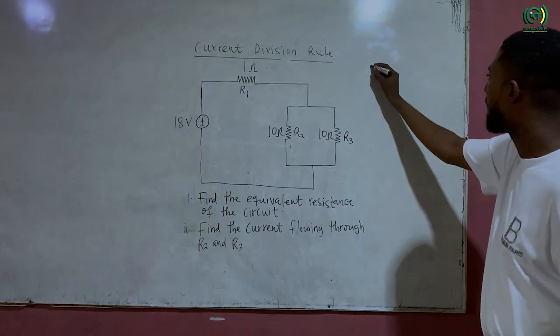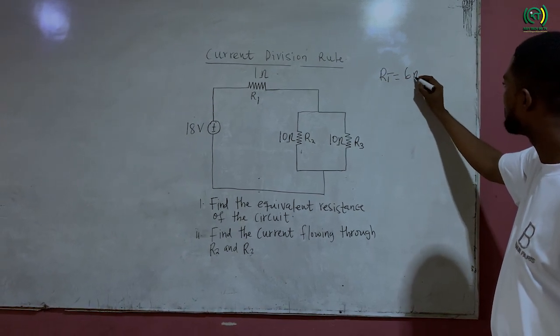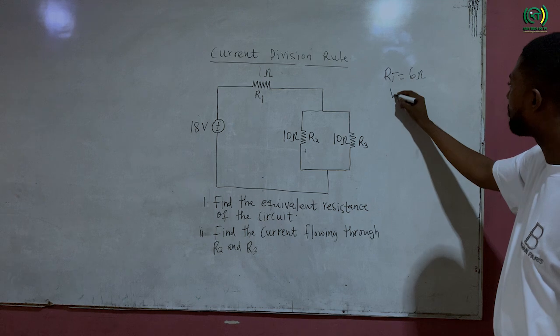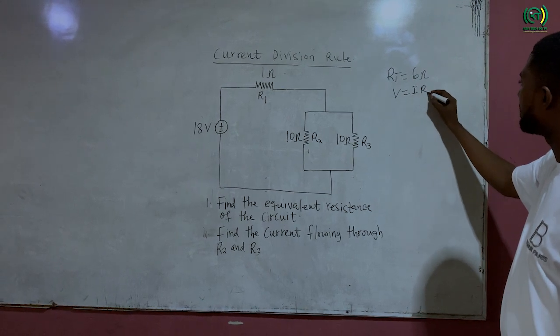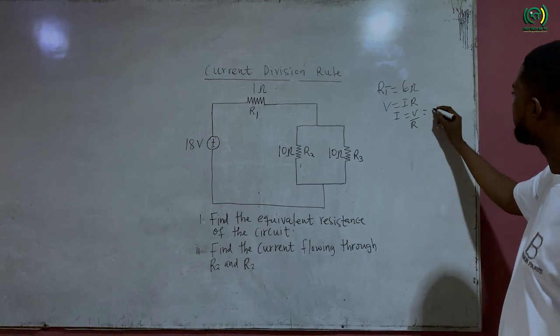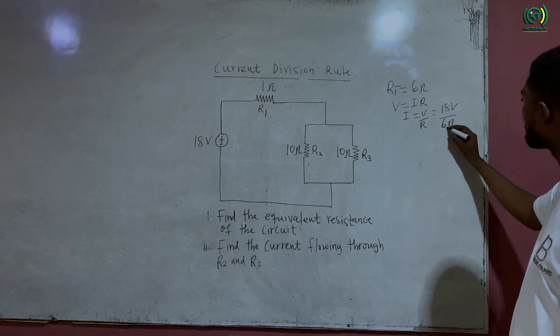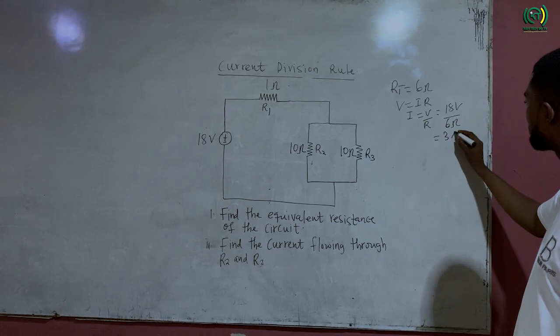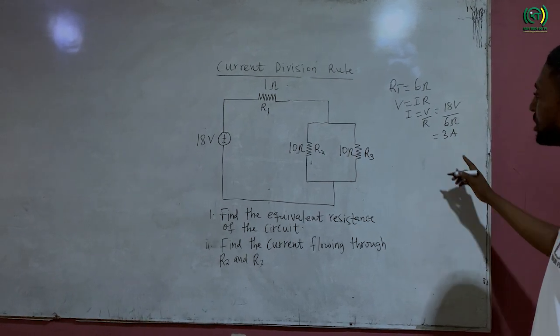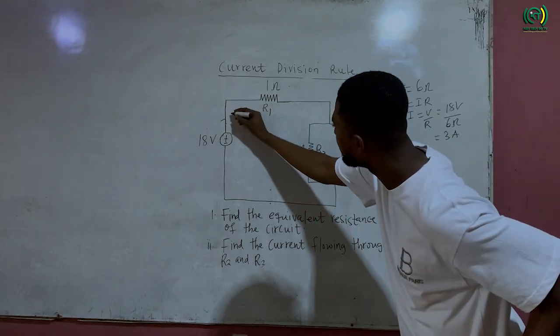Now remember the RT, which is the total resistance, is given as 6 ohms. But from Ohm's law, V is equal to IR. Therefore my current will be equal to voltage over resistance and the voltage is 18 volt over 6 ohms giving us 3 amps. So the current which is produced by the source voltage is 3 amps.